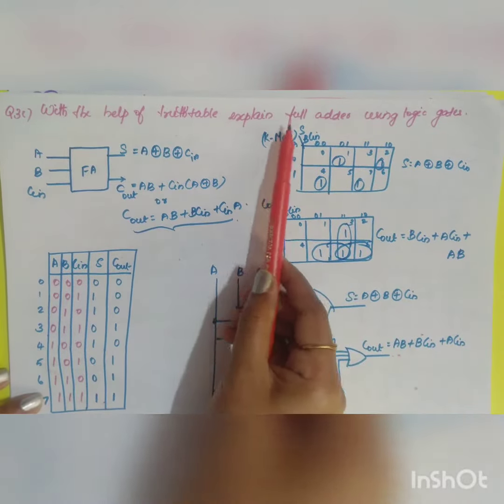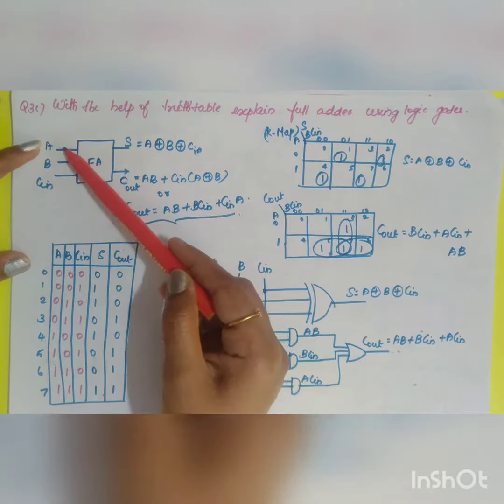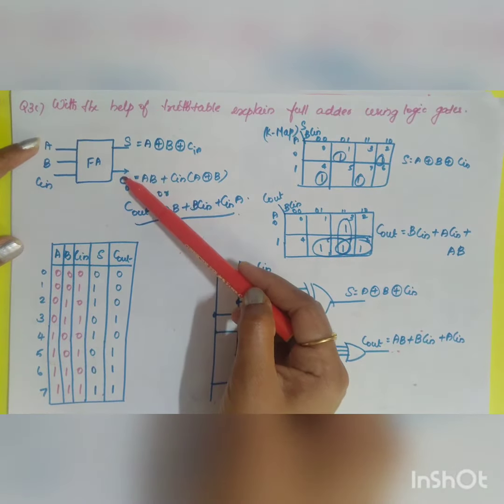So the next question is: with the help of truth table, explain full adder using logic gates. You know that full adder consists of three inputs - A, B, and carry in - and your output is your sum and carry out.